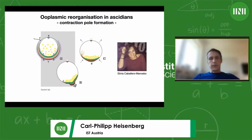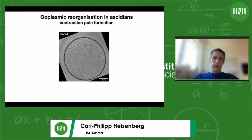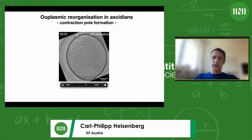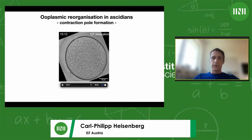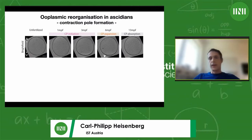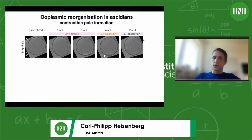The first thing Silvia did was look dynamically at shape changes of the oocyte upon fertilization. What you see here is an unfertilized oocyte. Upon fertilization there are a couple of distinct shape changes: first an elongation, then a little flattening, then the formation of the contraction pole, and then eventually the relaxation and resolution of the contraction pole at the vegetal pool. She subdivided these shape changes into three distinct phases: contraction pole initiation, expansion, and absorption — taking roughly 3 minutes, 3 minutes, and 30 minutes respectively.